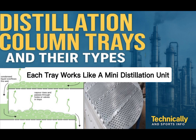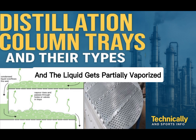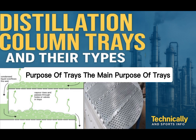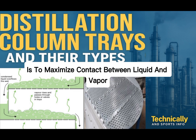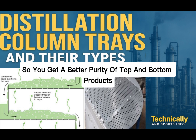Each tray works like a mini distillation unit. The vapor gets partially condensed and the liquid gets partially vaporized, separating lighter and heavier components step by step. The main purpose of trays is to maximize contact between liquid and vapor. This contact improves separation efficiency, so you get better purity of top and bottom products.